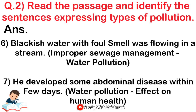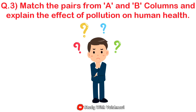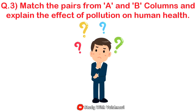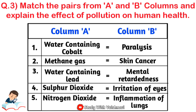Question number two is completed. Now let's move to question number three: match the pairs from column A and column B and explain the effect of pollution on human health. First: water contaminated with cobalt — paralysis. Second: methane gas — skin cancer. Third: water containing lead metal — redness. Fourth: sulfur dioxide — irritation of eyes. Fifth: nitrogen dioxide — infection of lungs. Question number three is also completed.